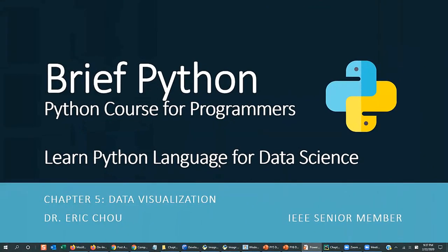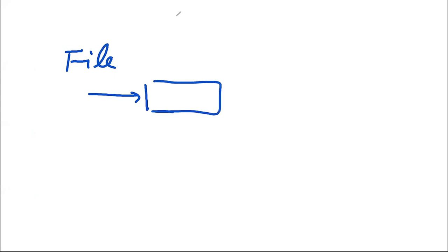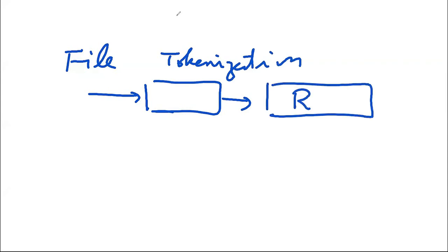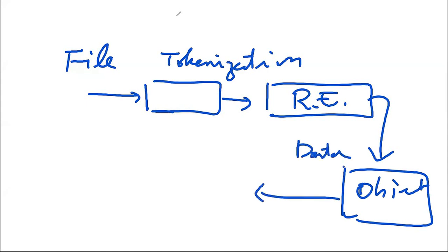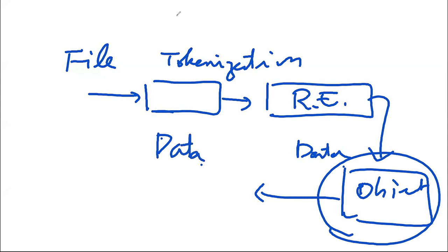Hello, let's get started with Chapter 5: Data Visualization. So far we talked about data processing in a few stages: starting from a file, reading data in, going into tokenization, then pattern recognition and regular expressions, and then into objects and the data model. Now we start to look at how, starting from this data model, we go into data processing and data visualization.